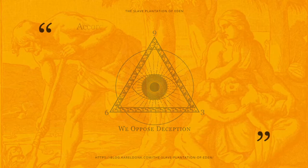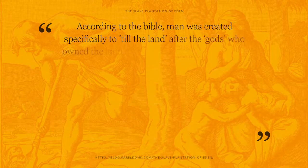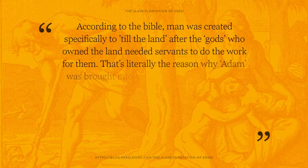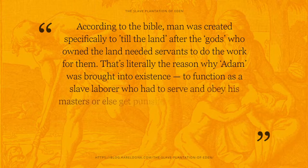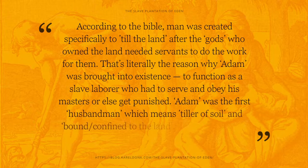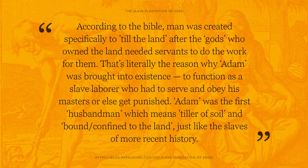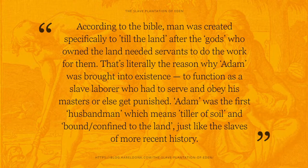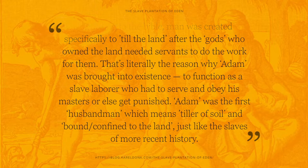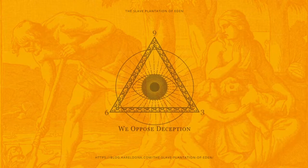According to the Bible, man was created specifically to till the land after the gods, who owned the land, needed servants to do the work for them. That's literally the reason why Adam was brought into existence — to function as a slave laborer who had to serve and obey his masters, or else get punished. Adam was the first husbandman, which means tiller of soil and one bound and confined to the land, just like the slaves of more recent history, who were also not allowed to leave their plantations and had to obey and serve their masters.